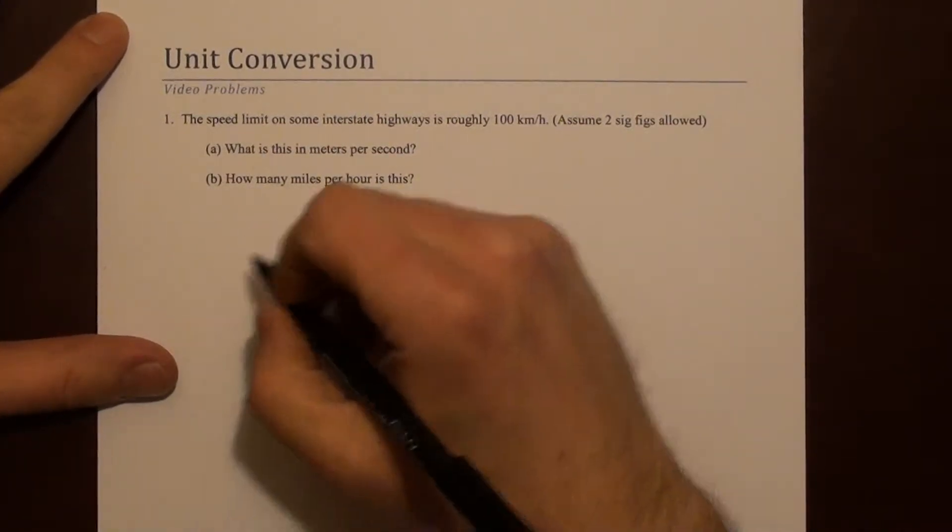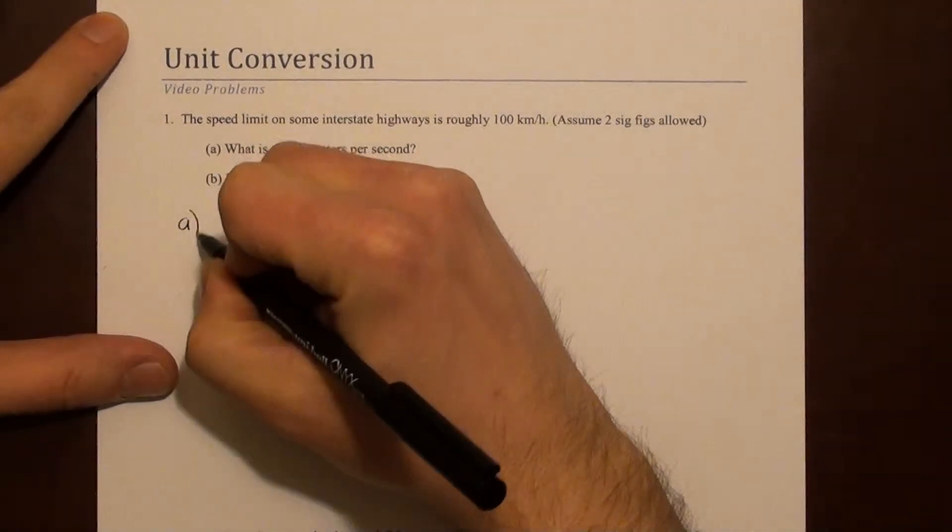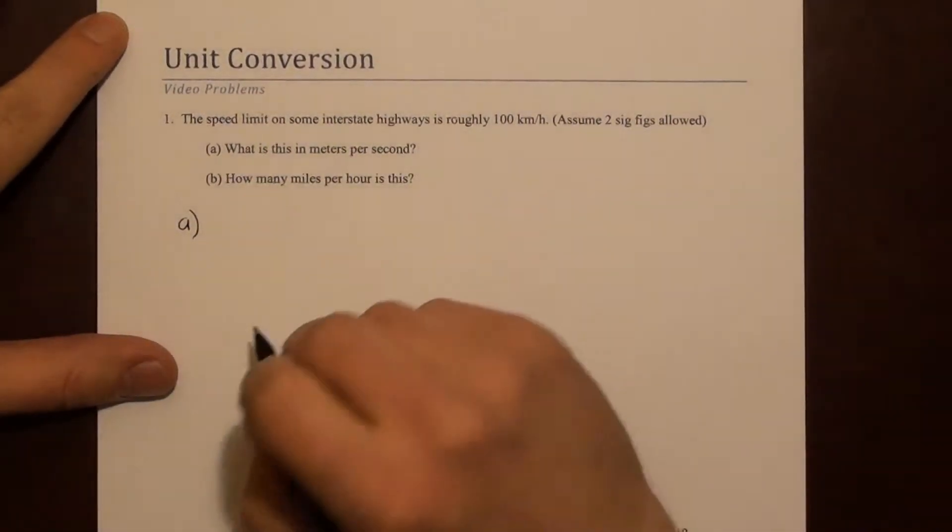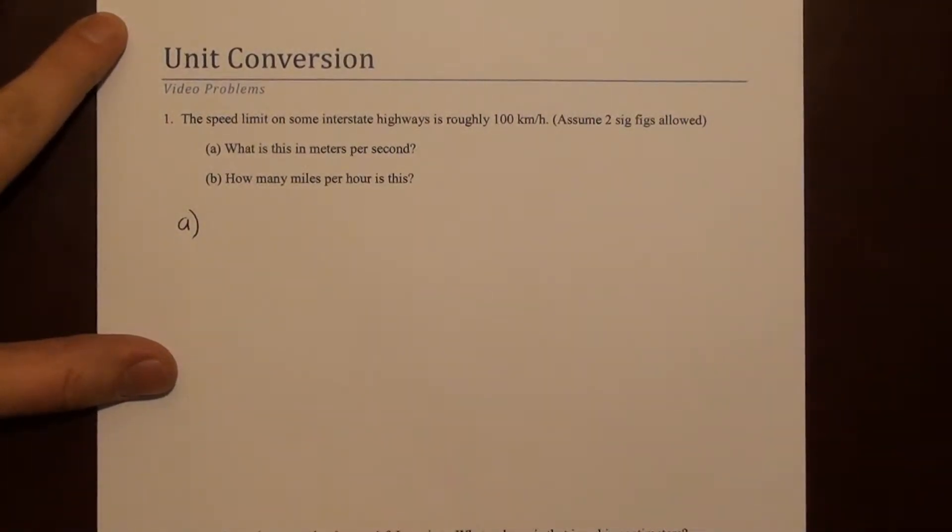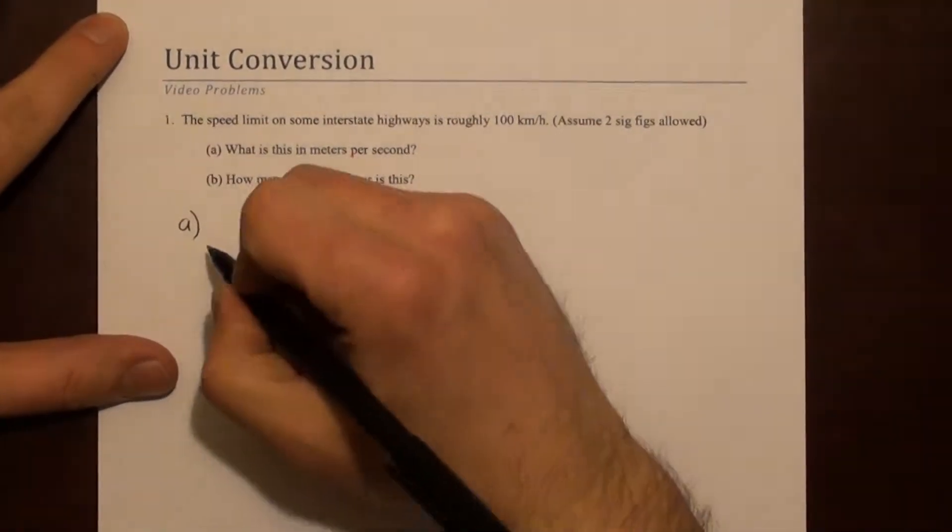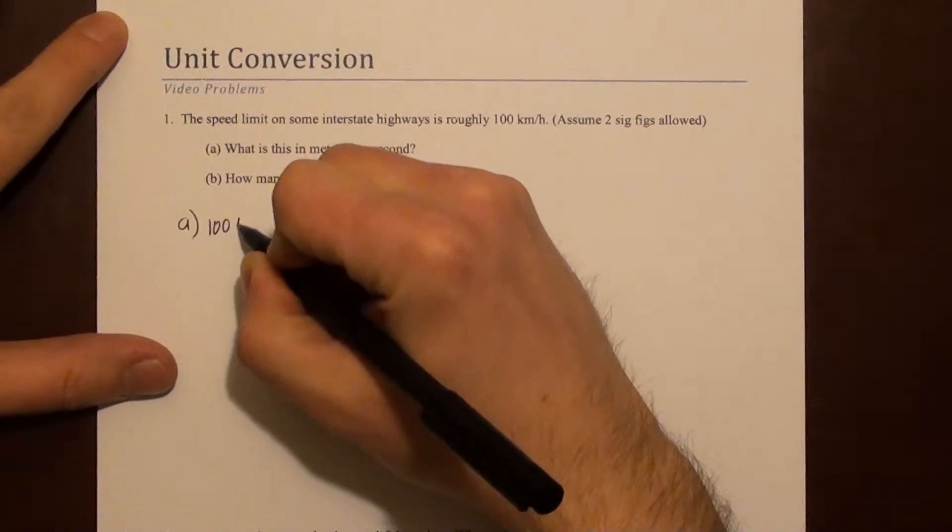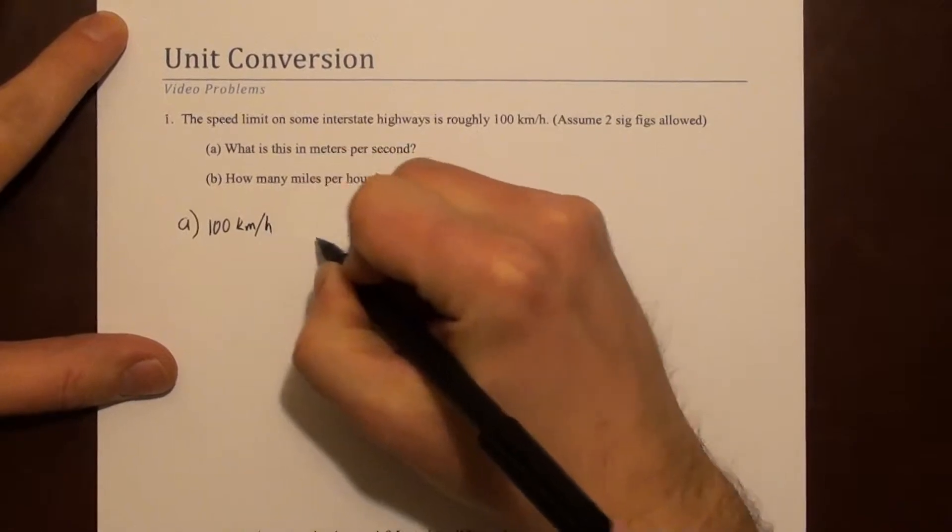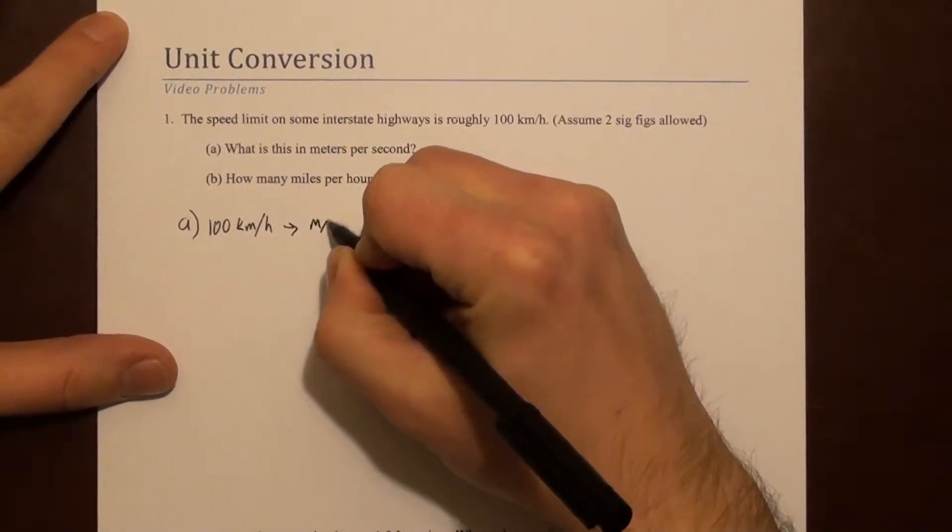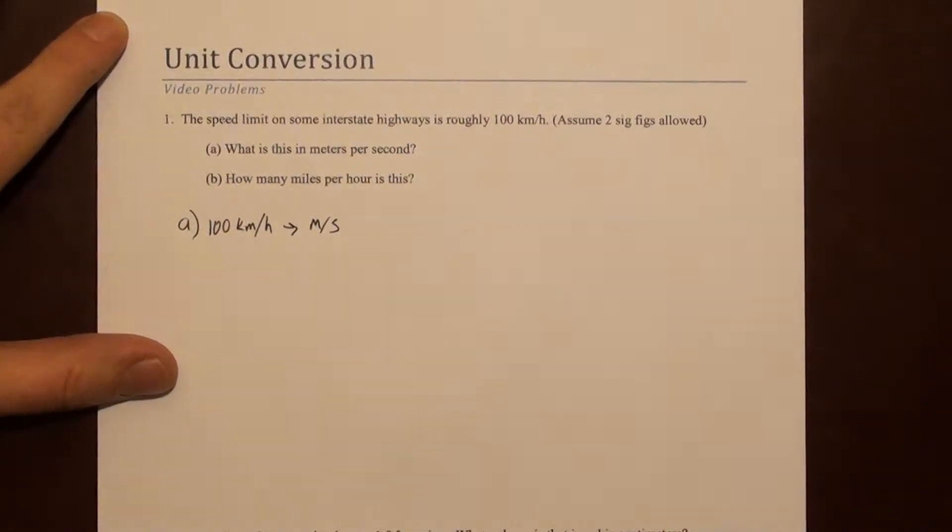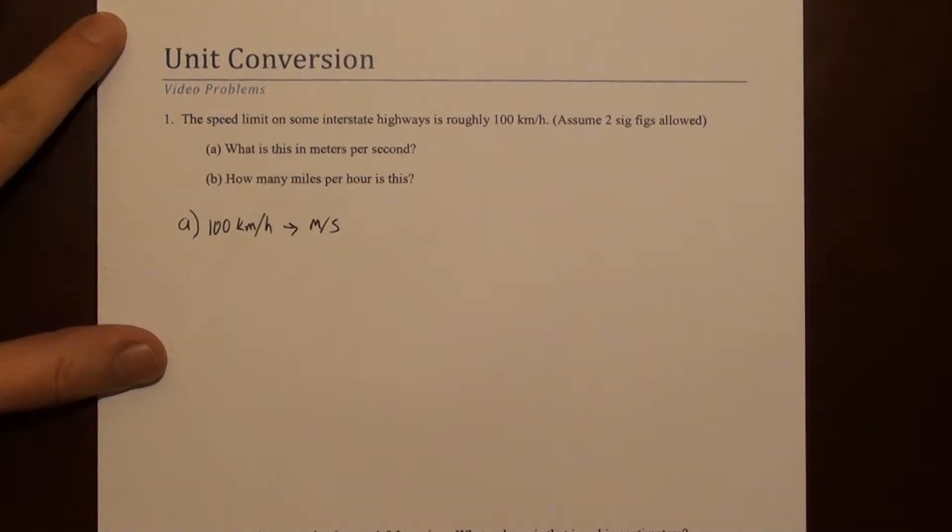First off, part A. We're asked to convert this to meters per second. So we're looking at 100 kilometers per hour converted to meters per second. It looks like we're changing both the numerator and the denominator, so we need to think about what factors we need to do that.